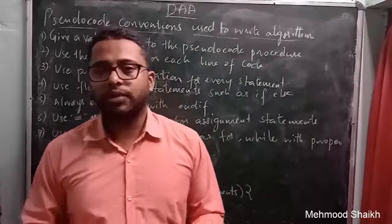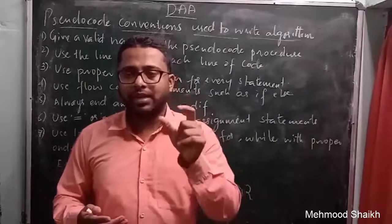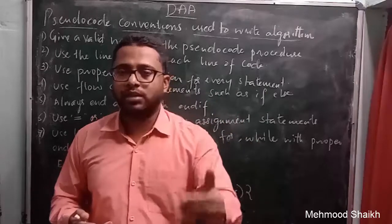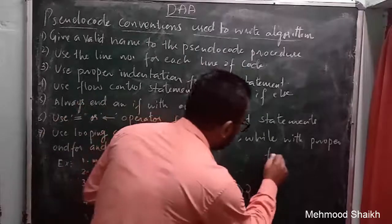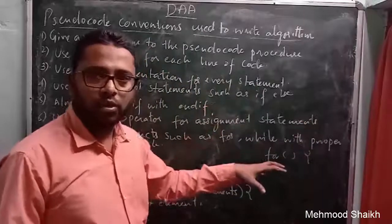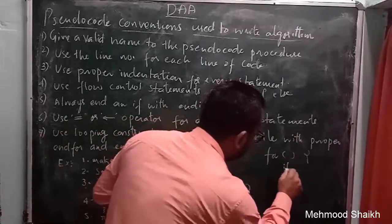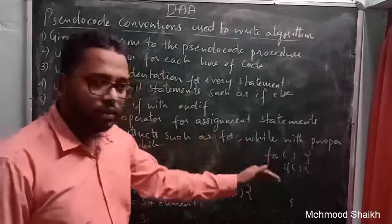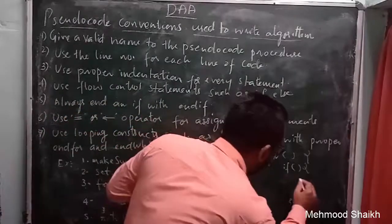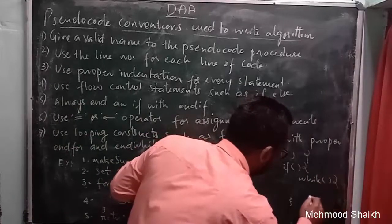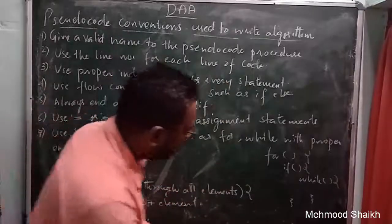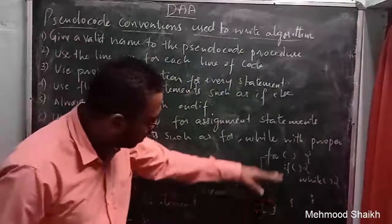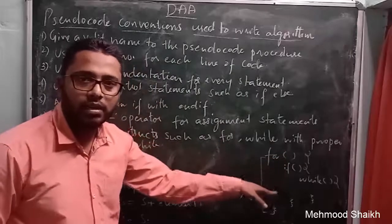While writing the pseudocode, you need to apply proper indentation. With that indentation, the reader can easily come to know where your if, for, or while loop has started and where it has ended. Suppose you have started your for loop here, and then inside the for loop if you want to start an if, just put a space and then start if. Inside the if, if you want to use a while statement, again put a little bit of space and then use while.